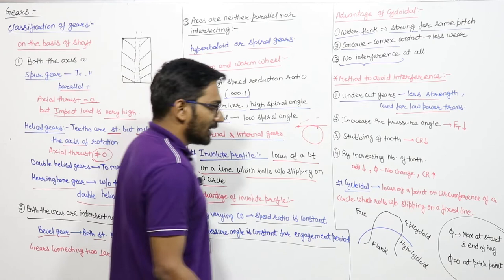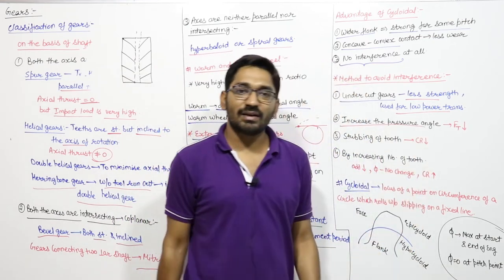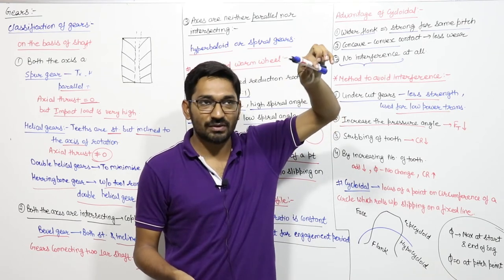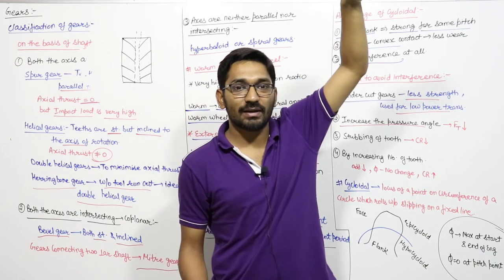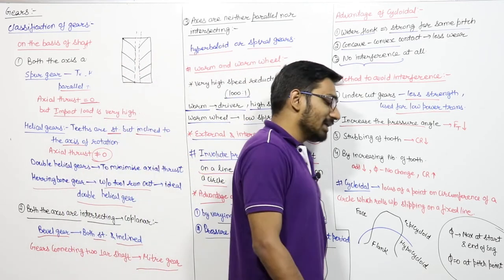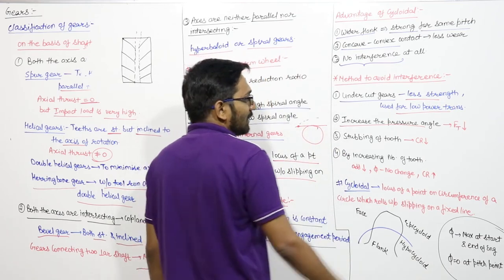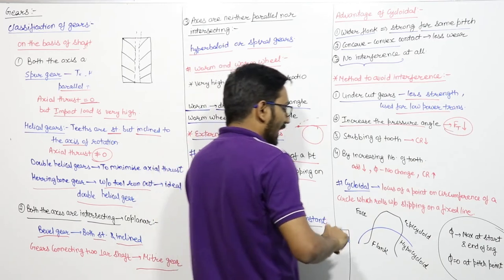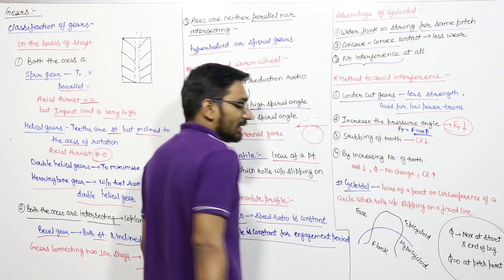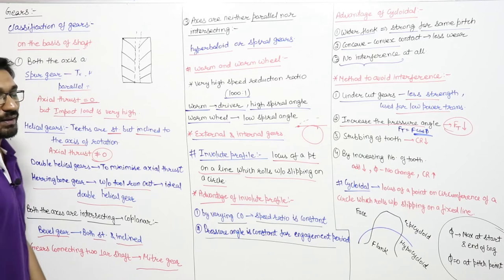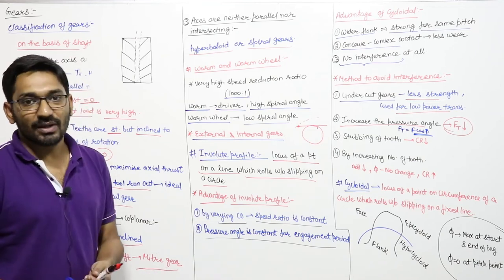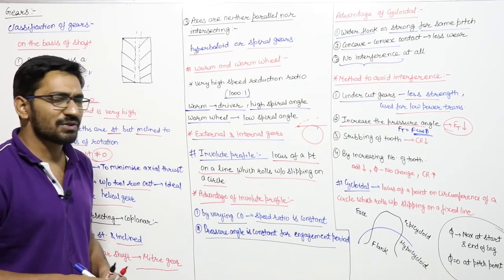Second method: increase the pressure angle. Increasing the pressure angle decreases the radius of the base circle, which increases the distance to the interference points M and N, reducing interference chances. The limitation is that as pressure angle φ increases, transmitted force Ft = F·cos(φ) decreases, so less power is transmitted. The maximum pressure angle is 20 degrees.